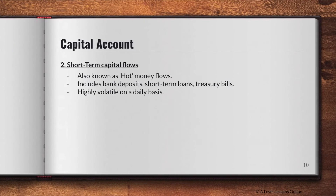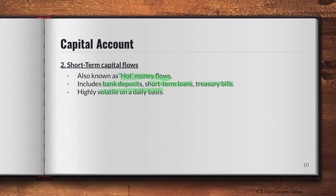Short-term capital flows are also known as hot money flows. The money is like it's on fire — you can't hold it for very long. In the short run, capital flows in the form of money enter the economy and leave very quickly — within a day or a week. This includes bank deposits, short-term loans, and treasury bills. It is very volatile on a daily basis, with fast trading occurring almost instantaneously.